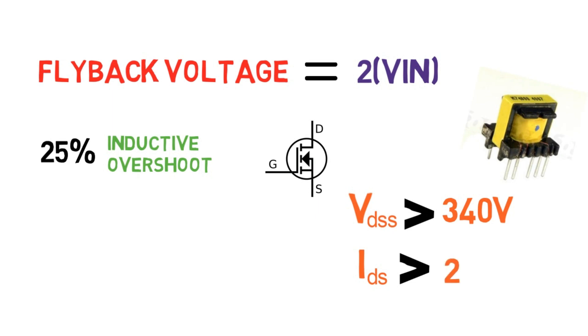Next we'll select the rectifier diode. They are subjected to high large peak and RMS current stress, so the current handling capacity of the diode should be at least greater than twice of I_DC. So like that we can select all the required components for our design.